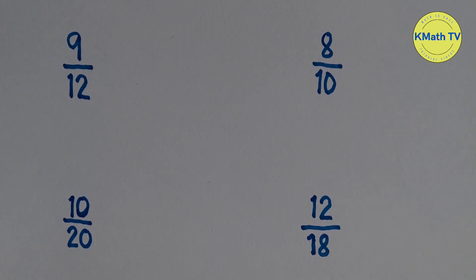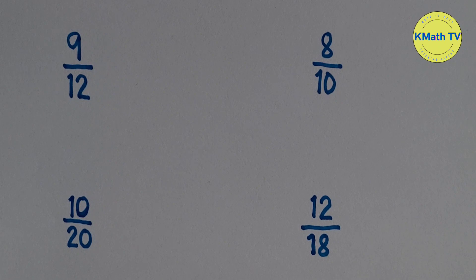To reduce proper fractions to lowest terms, or to simplify proper fractions, we need to divide the numerator and the denominator by their GCF, or greatest common factor.